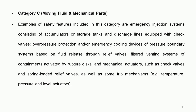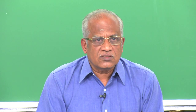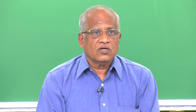In Category C, mechanical parts and moving fluid are involved. Examples are emergency injection systems with accumulators or storage tanks provided with check valves and over-pressure protection, and emergency cooling devices of the pressure boundary systems where the fluid goes through relief valves — such as a spring-loaded relief valve or a pressure-operated relief valve that opens when pressure rises and closes when it comes down.